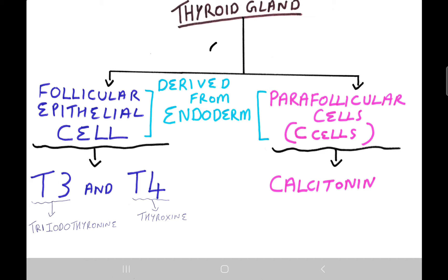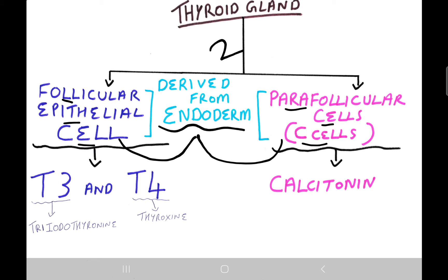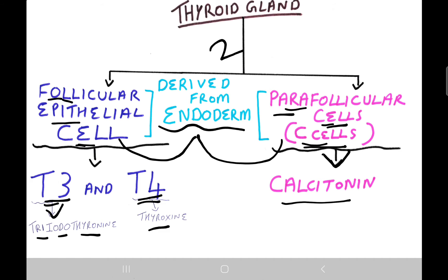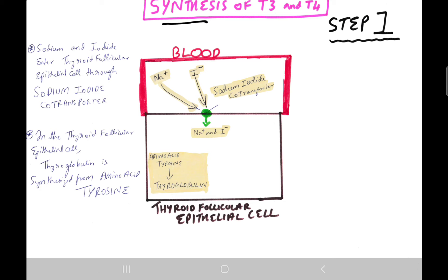The thyroid gland has two types of cells: follicular epithelial cells and parafollicular cells, also called C-cells. Both are derived from endoderm. Follicular epithelial cells give rise to T3 (triiodothyronine) and T4 (thyroxine). Parafollicular C-cells give rise to calcitonin.